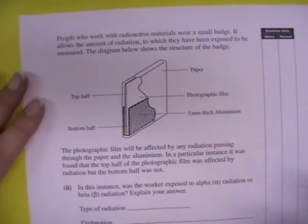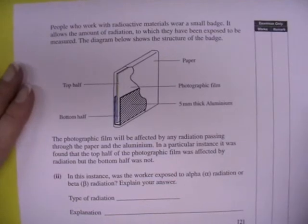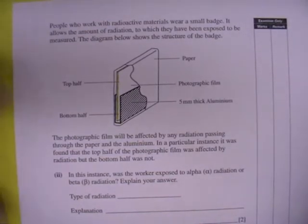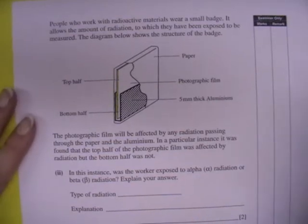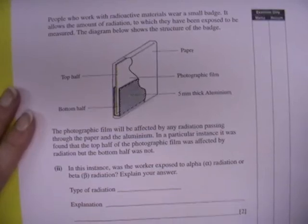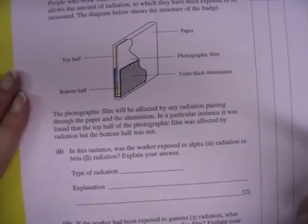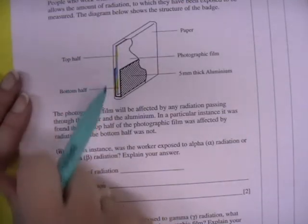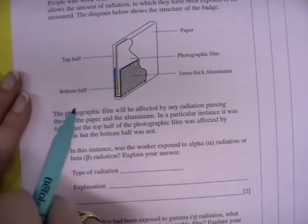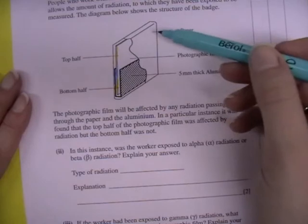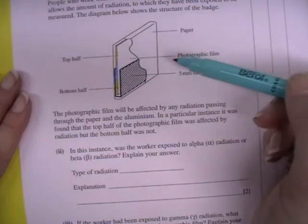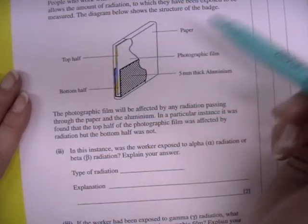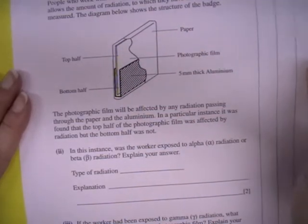Continuing on on this theme of radiation, people who work with radioactive materials wear a small badge. It allows the amount of radiation to which they have been exposed to be measured. The diagram below shows the structure of the badge. So we have photographic film, we have a support at the back and then there is photographic film and there is a layer of aluminum across the bottom half and then there is a full layer of paper across the whole piece of the badge.